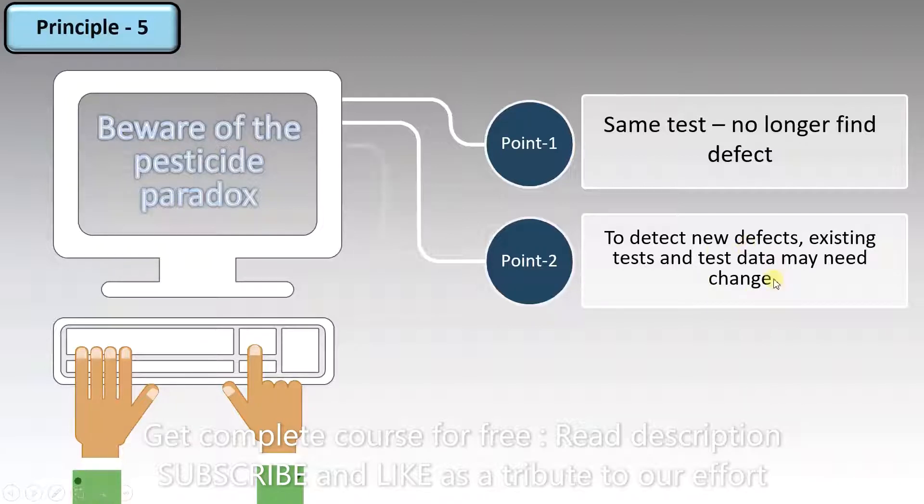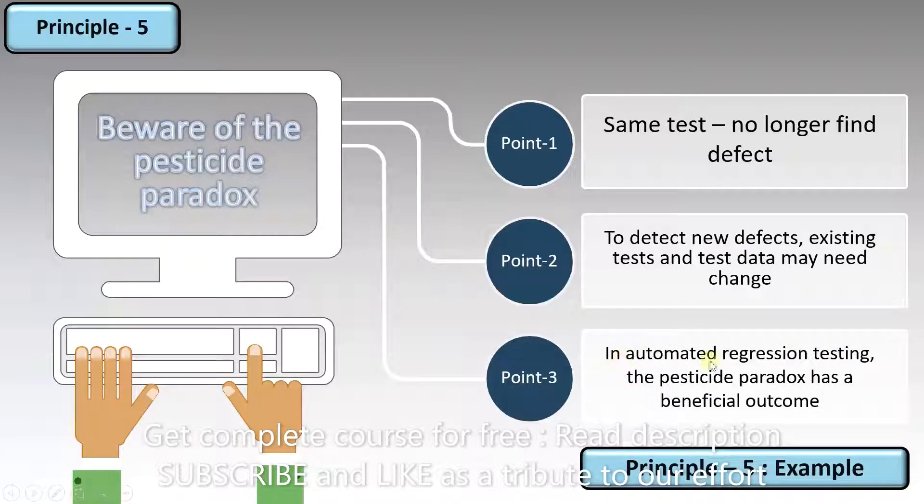And the third point is when you are performing automated regression testing, the pesticide paradox has a beneficial outcome. When you run automated testings, you are actually running scripts. So if you run the same script, it is highly unlikely that you will find new defects.